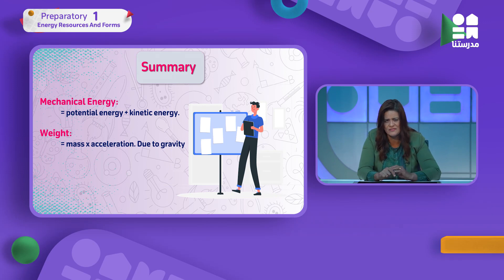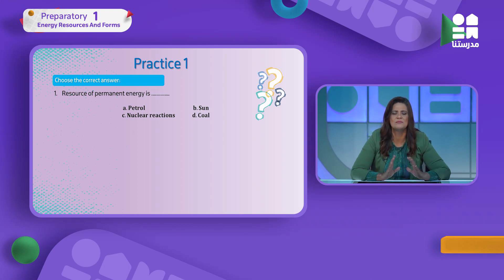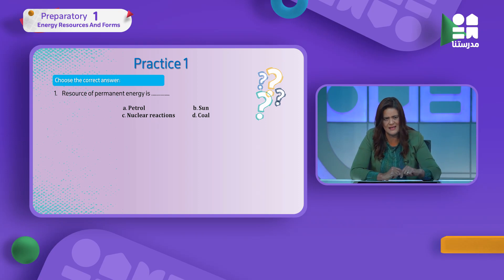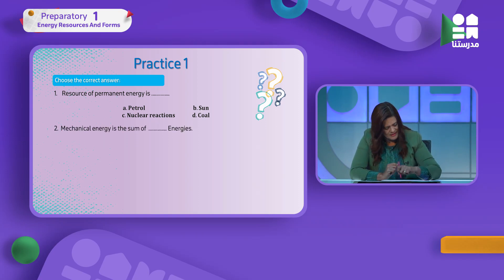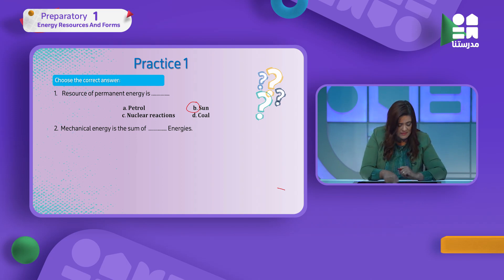Mechanical energy is the sum of potential and kinetic energy. Weight equals mass times gravity. Now for practice: which is a resource of permanent energy? The sun. And mechanical energy is the sum of which energies? Potential plus kinetic.